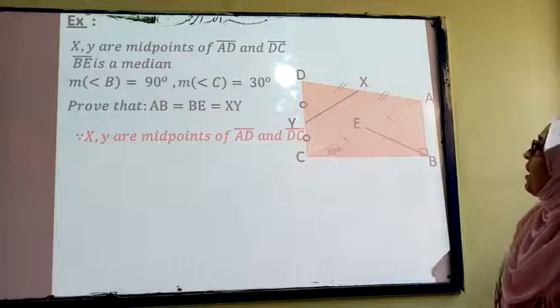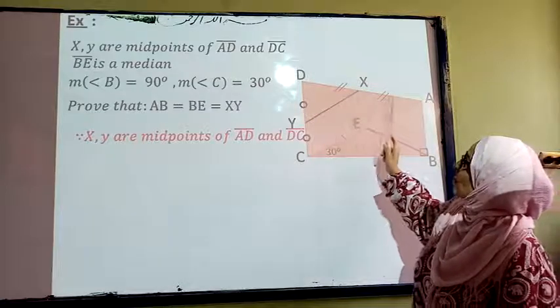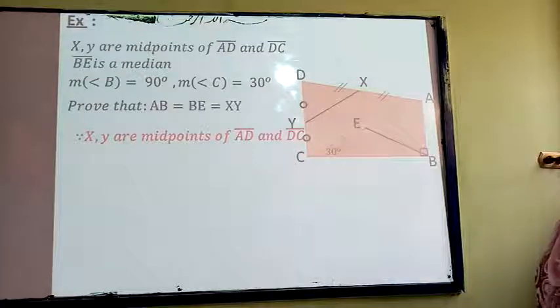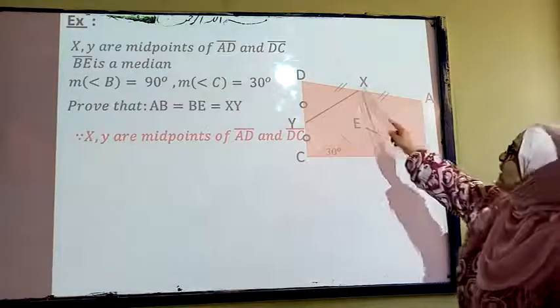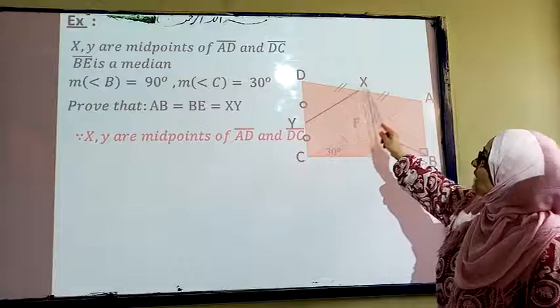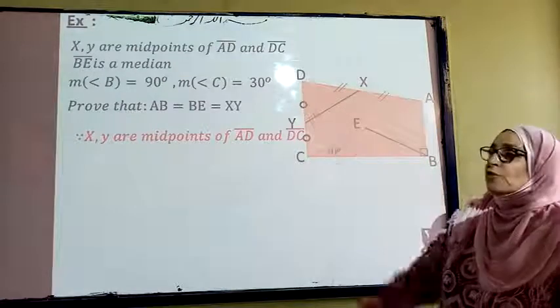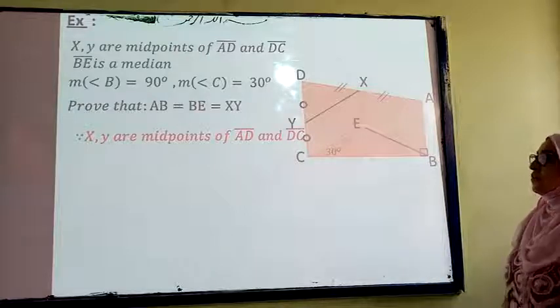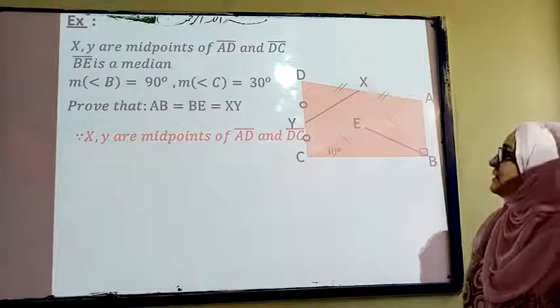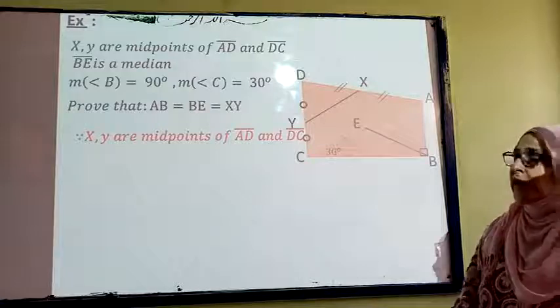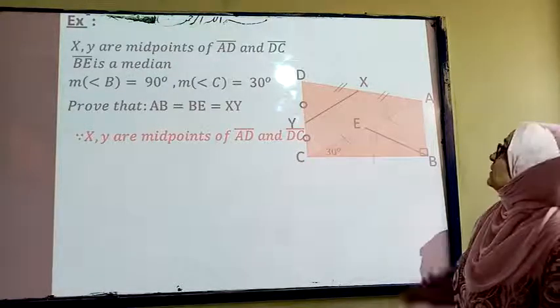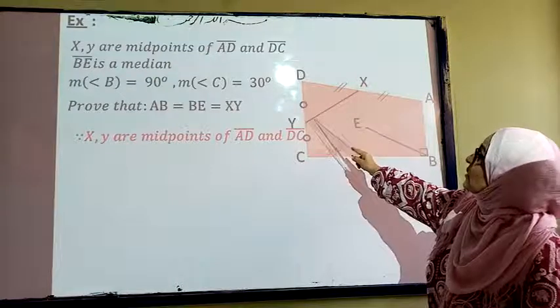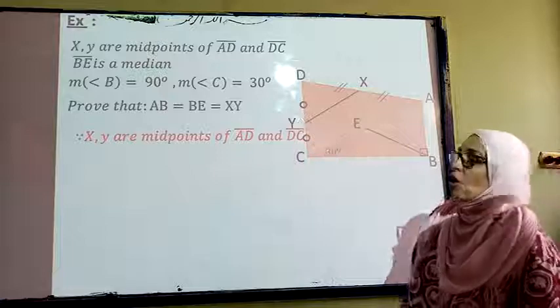Now X and Y are midpoints of AD and DC. So XY connects between the midpoint of two sides in a triangle. So let's remember this theorem from grade 7 which says that the line segment at the midpoint of two sides of a triangle is parallel to the third side and equals its half in length.